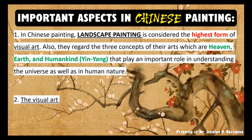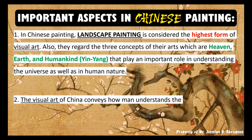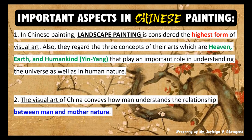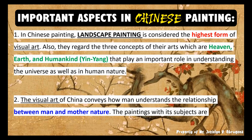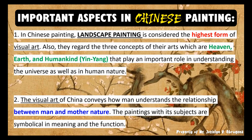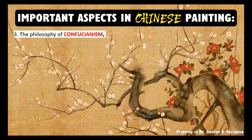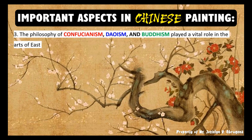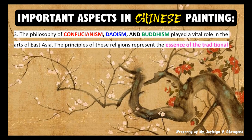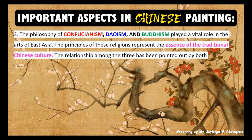Second, the visual art of China conveys how man understands the relationship between man and mother nature. The paintings with their subjects are symbolical in meaning and function. Third, the philosophy of Confucianism, Taoism, and Buddhism played a vital role in the arts of East Asia. The principles of these religions represent the essence of traditional Chinese culture, and the relationship among the three has been marked by both complementation and contention throughout history.